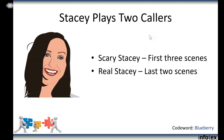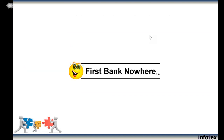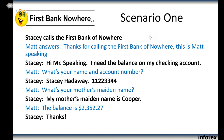For the first three scenes, we want you to see what it looks like when we're not asking out-of-wallet questions. Whenever we use a fake bank at Infotex, we use the First Bank of Nowhere. We're going to pretend like Matt works at the First Bank of Nowhere. We just want Matt and Stacy to read these scenes. I wouldn't want you to copy scenes one through three, as they show how not to ask out-of-wallet questions. But once we get to scenes four and five, you'll see what I mean.